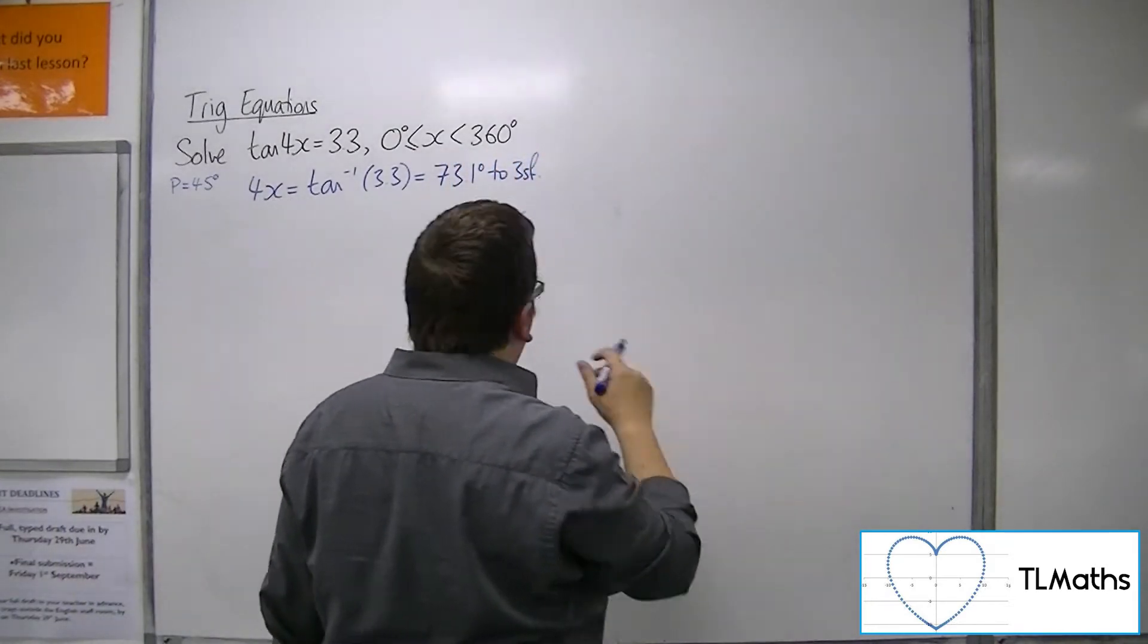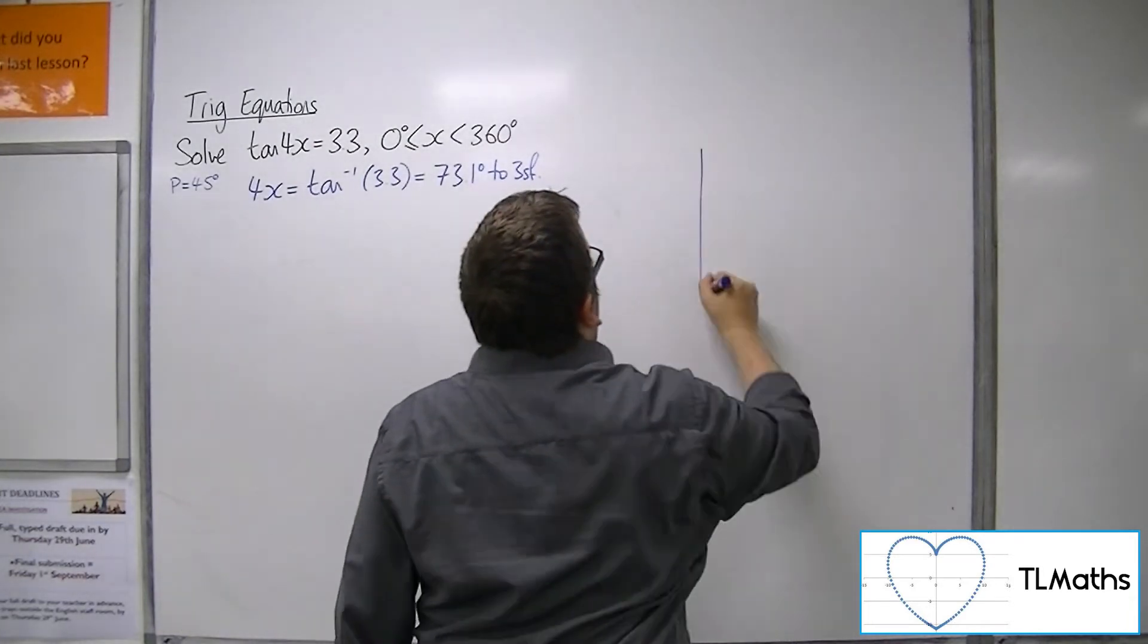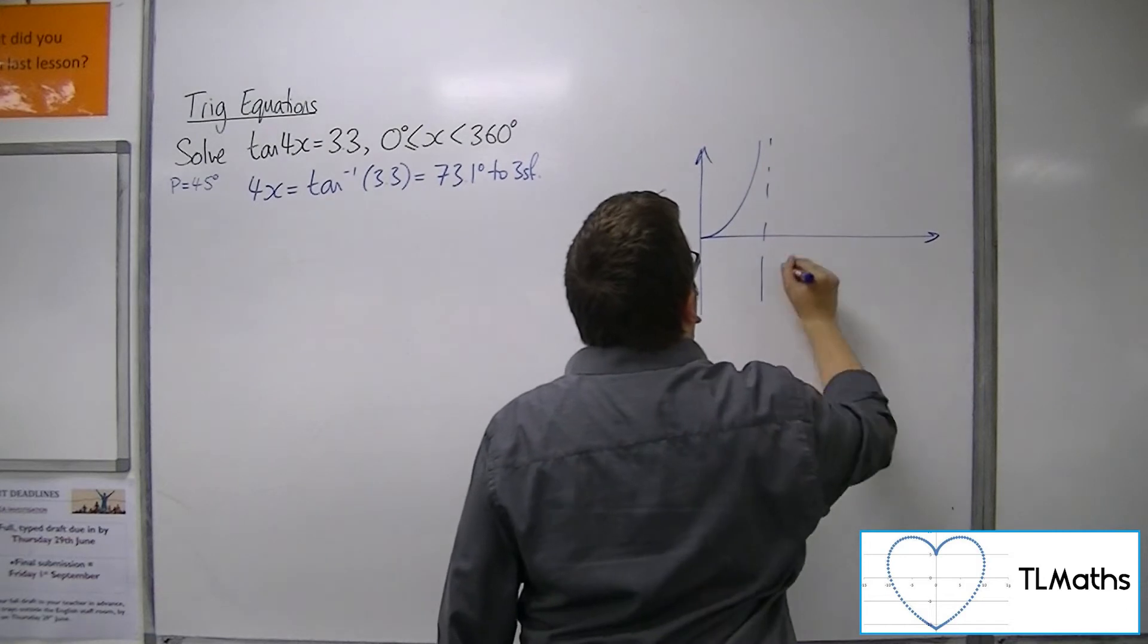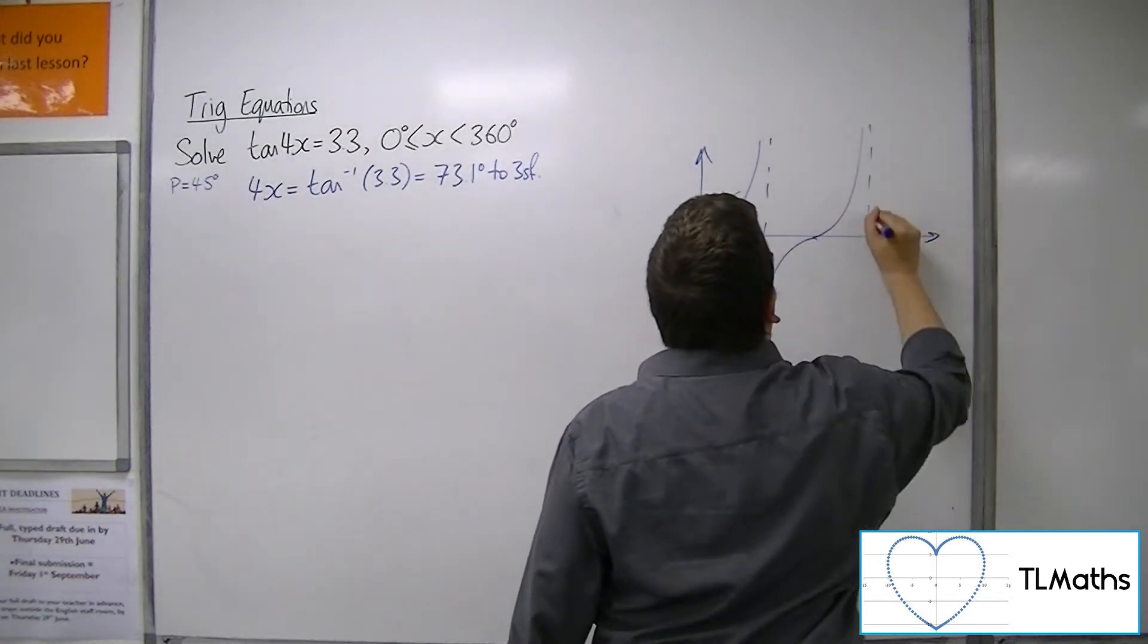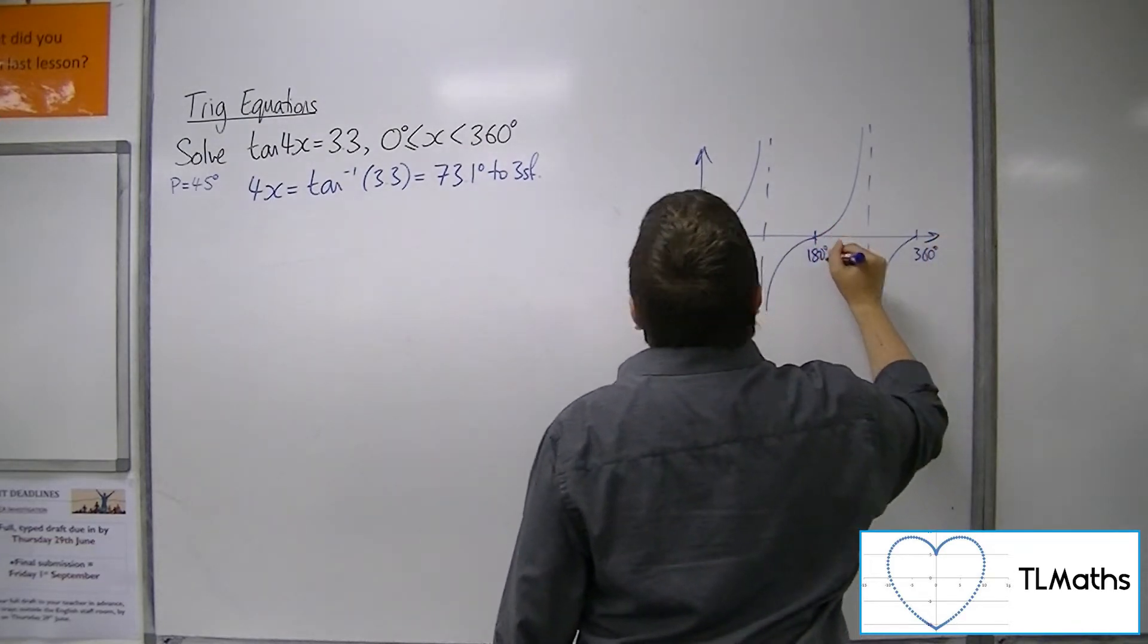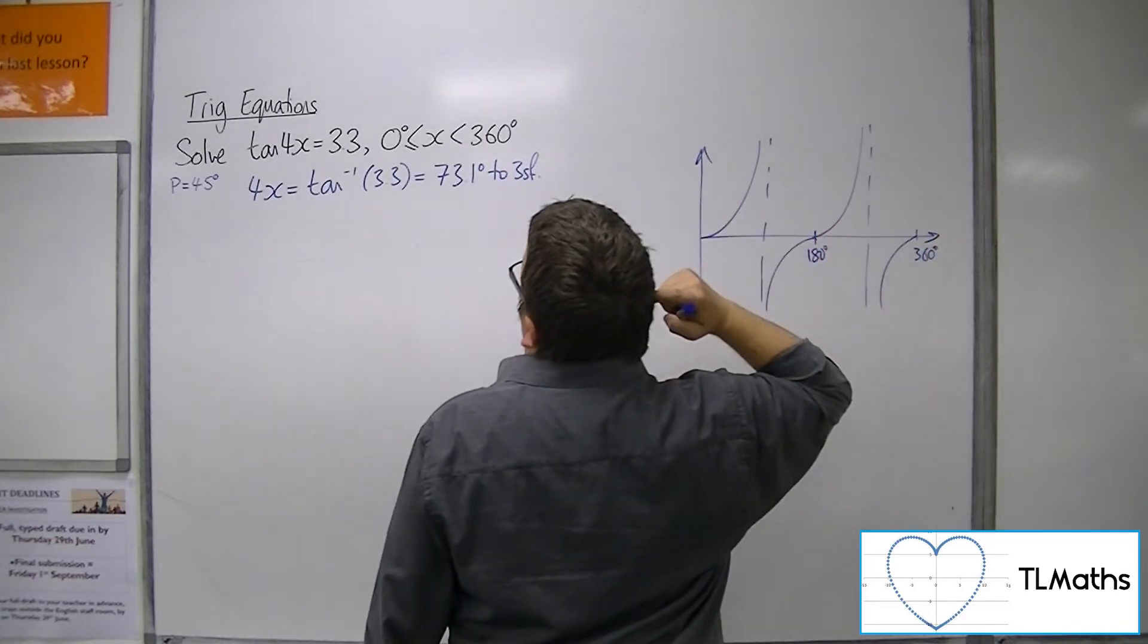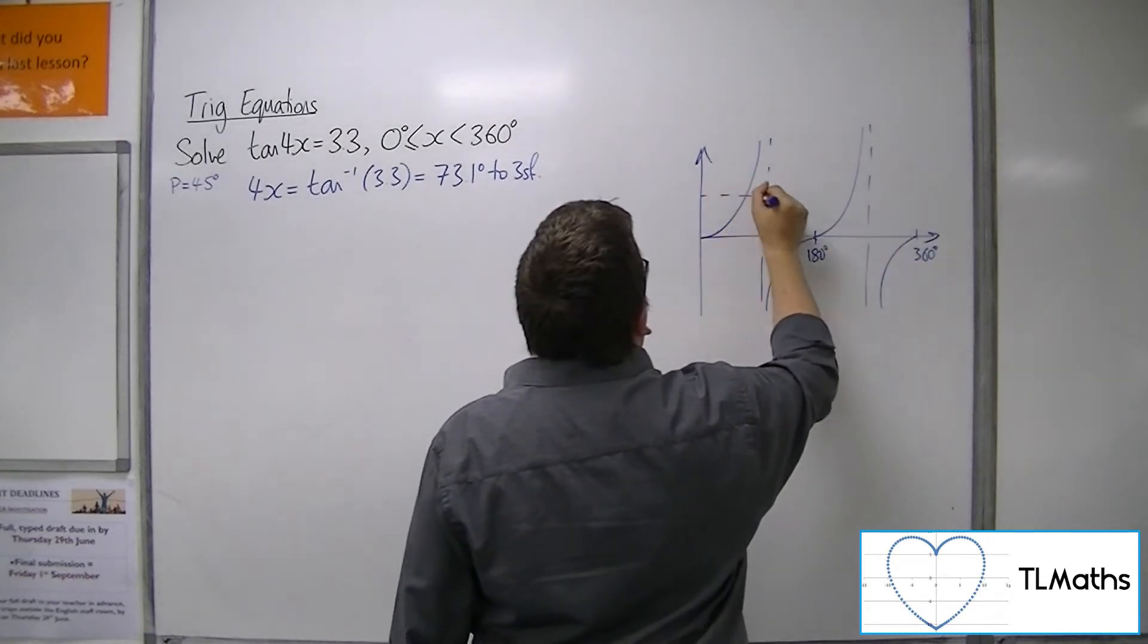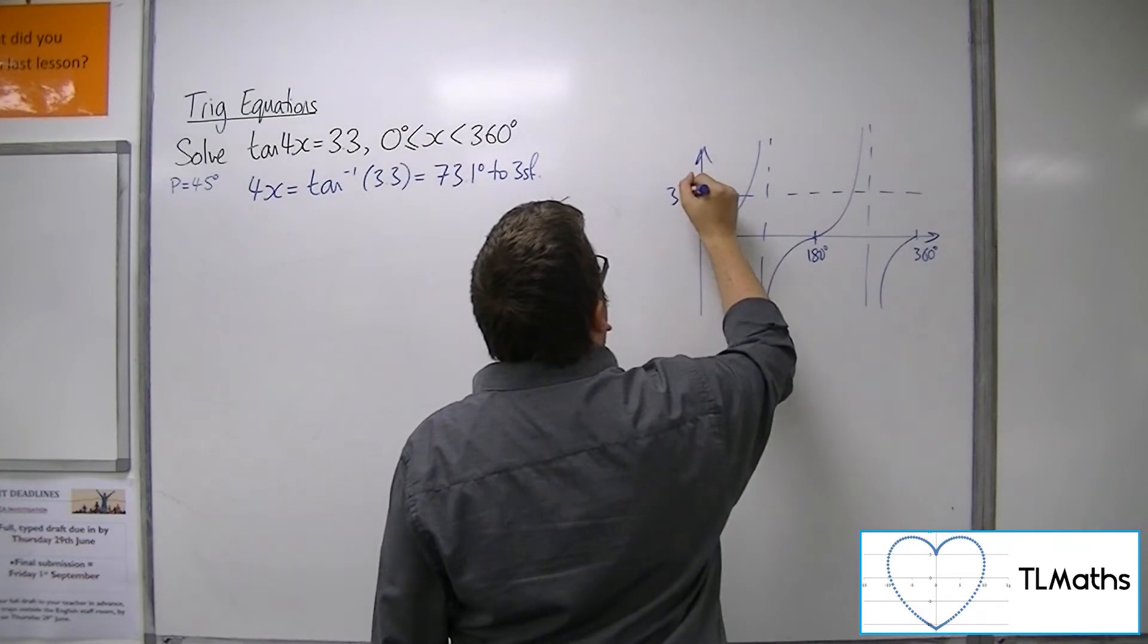Okay, now let's sketch tan. Doesn't need to be perfect. Now this is between 180 and 3, sorry, from 0 to 360. So 3.3 is up here.